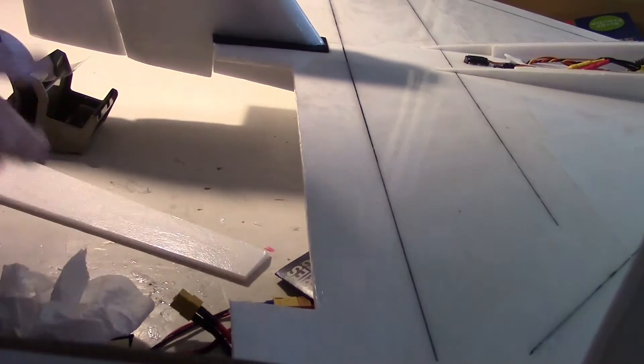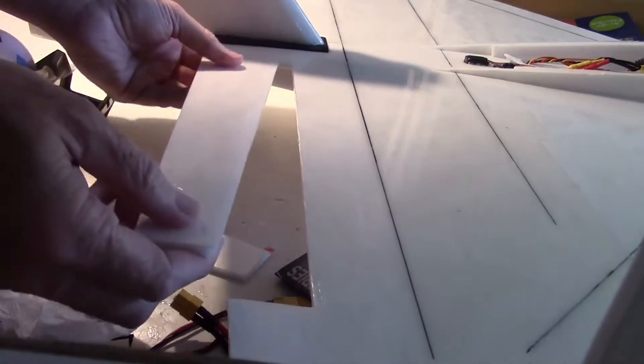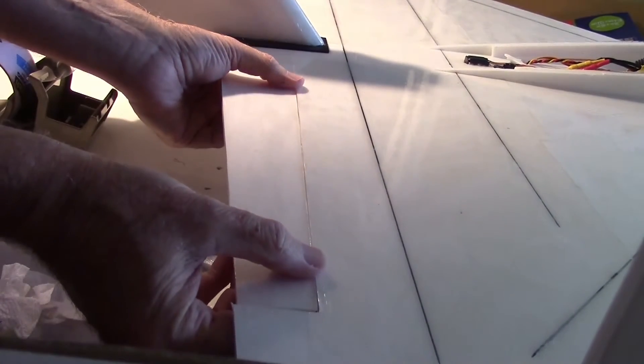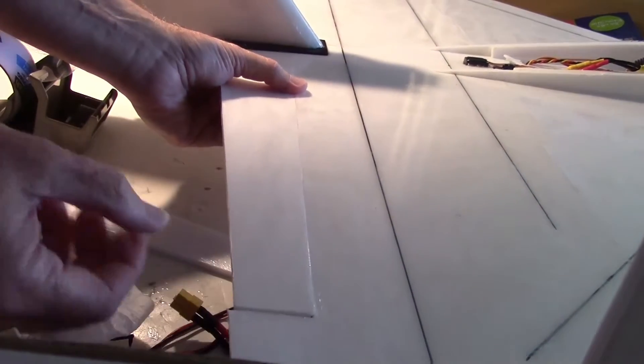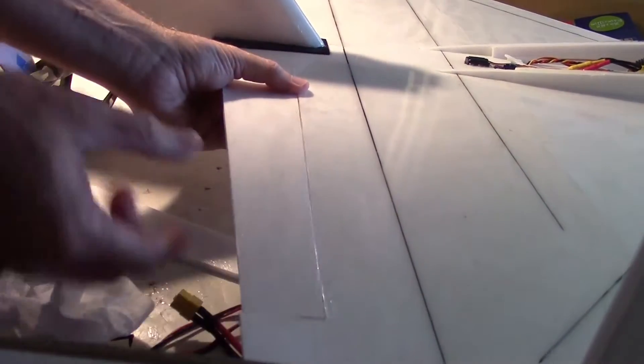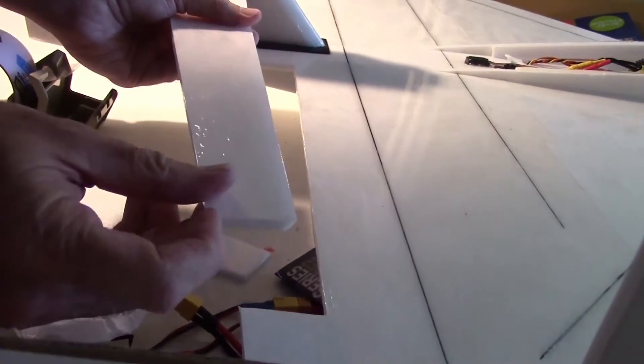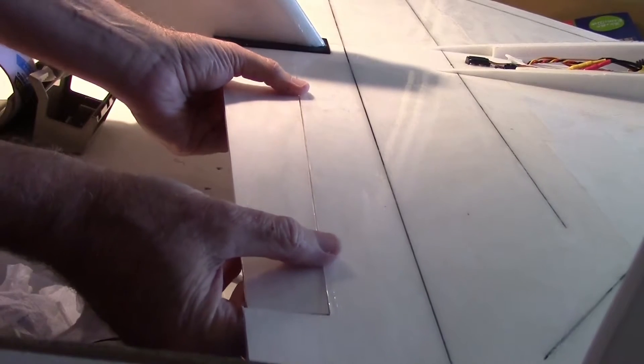Now I'm going to fit the elevators on. Let's see what we got here. Make sure there's a gap. I want a little gap at each end, not much. You might have to trim off the end if it rubs at all.